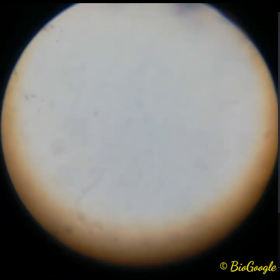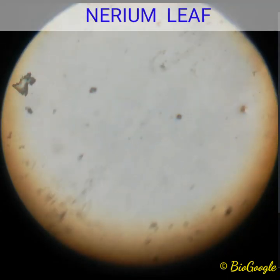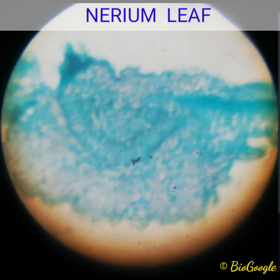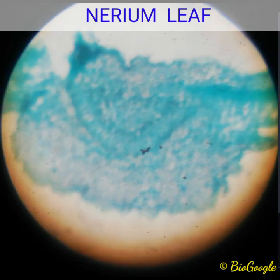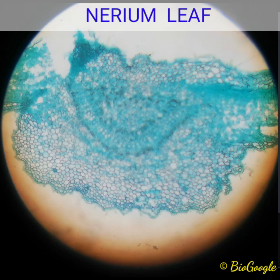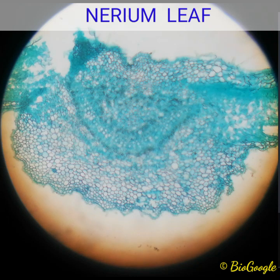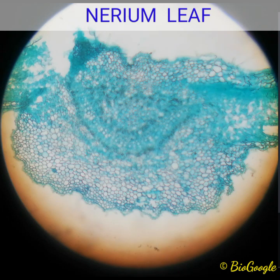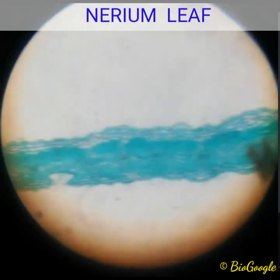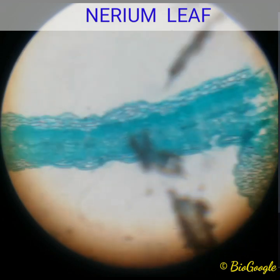Moving on to the next slide: I am taking the leaf of Nerium — Nerium indicum, oleander, called by many names. It is the transverse section of the leaf of Nerium. This portion is the midrib, and the upper epidermis, lower epidermis. At the midrib region, you can clearly see the vascular bundle — phloem on the upper side, xylem on the lower side. Just below the upper epidermis, we can see the sclerenchyma tissue that we call the bundle sheath. Moving the slide from one end to the other, it is the midrib region in the center, and the other end of the leaf on the other side.